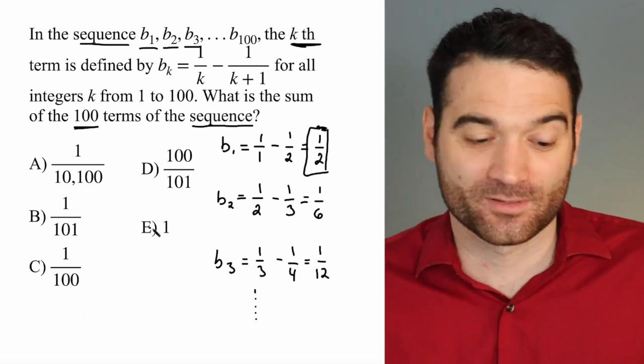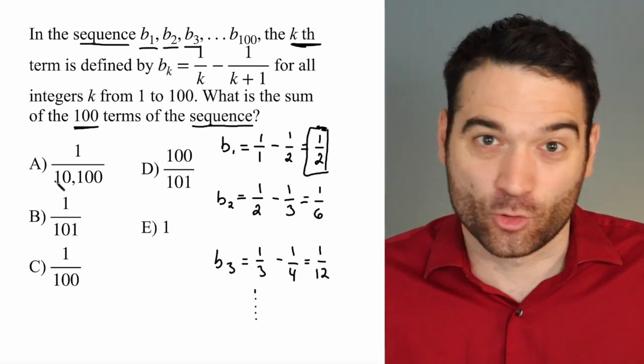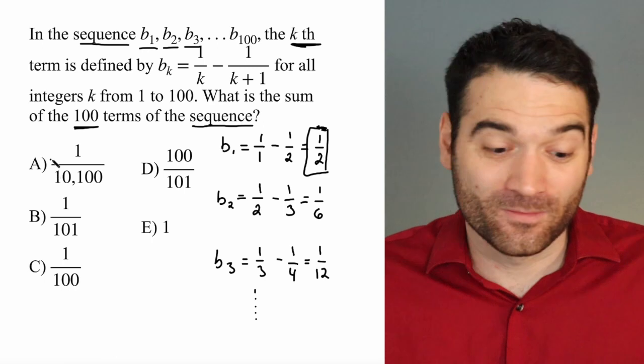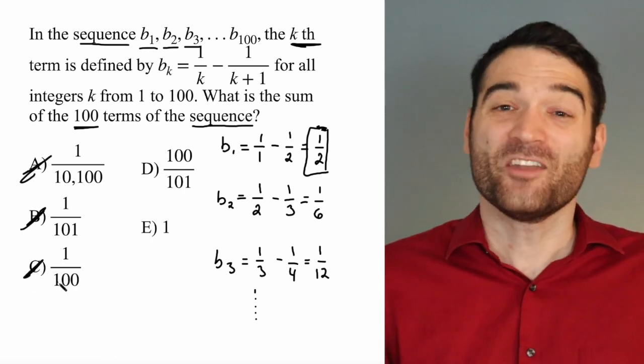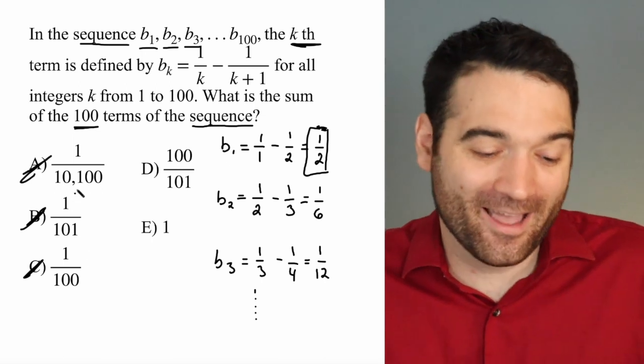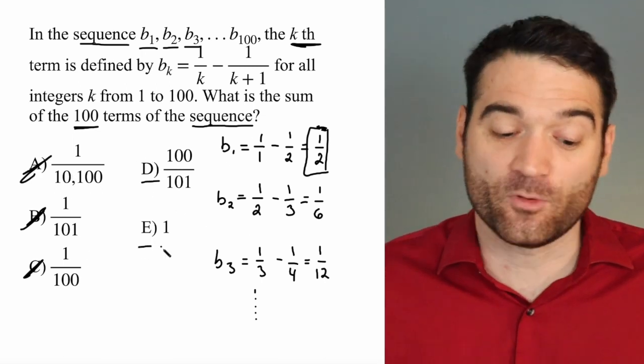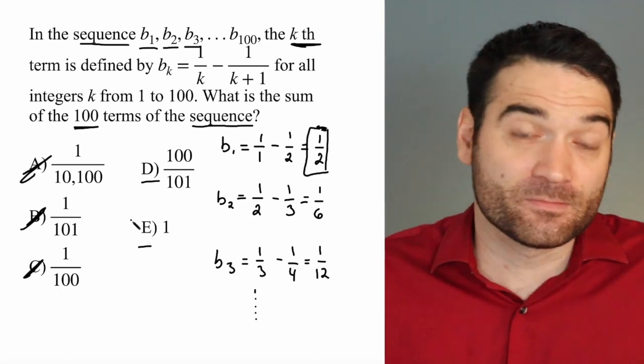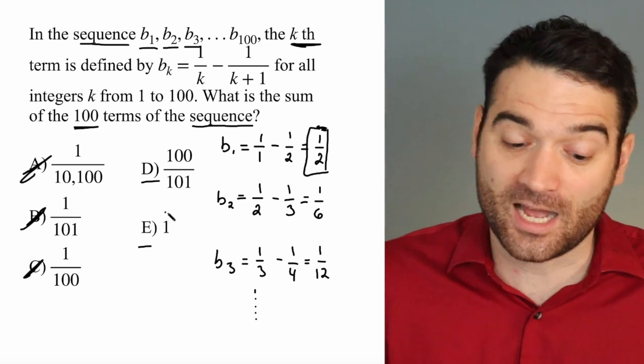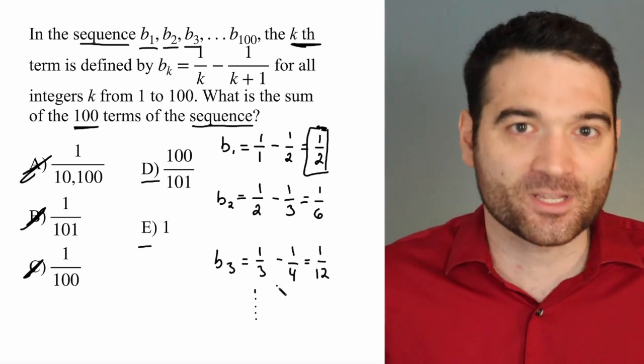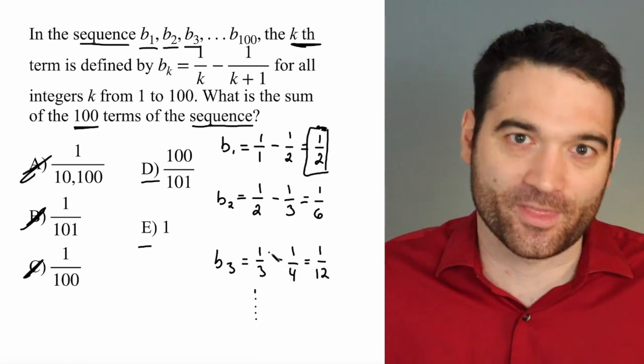Well, look at these answer options. Is 1 over 10,100 greater than 1 half? No, it's not. Neither is 1 over 101, and neither is 1 over 100. What I get by doing this is a way to just get down to a 50-50, which isn't ideal. Ideally, you'd like to solve the problem. But if you're stuck for time, just starting out, sometimes you'll notice a little shortcut like this. Okay, but here's the cheat code that I'm going to give you.